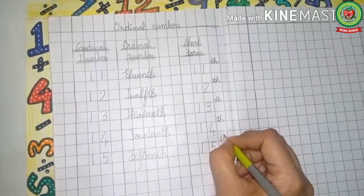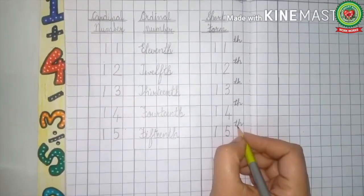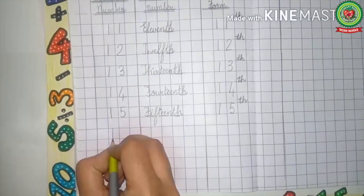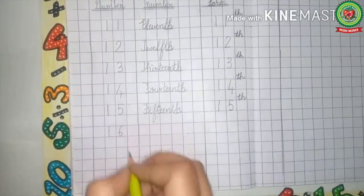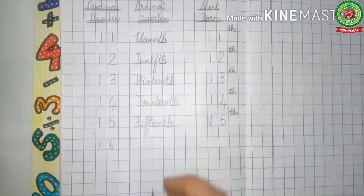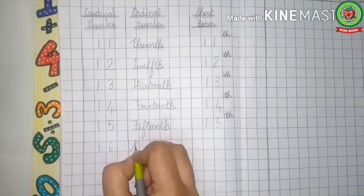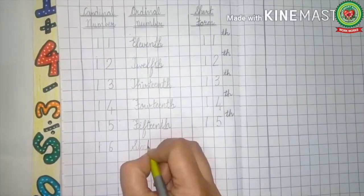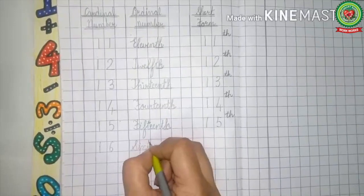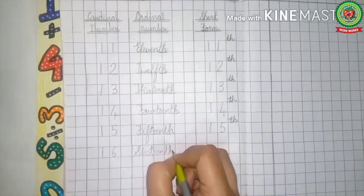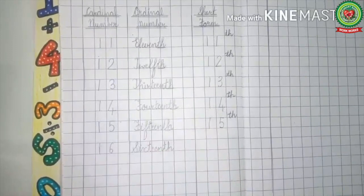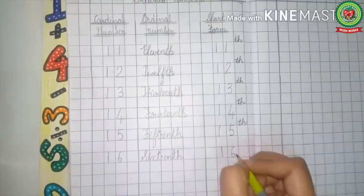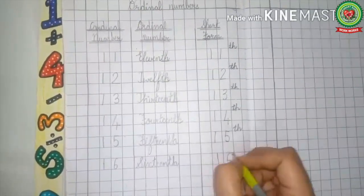After 15 comes 16, and the ordinal number of 16 is 16th. We write the spellings of 16 and add TH and it becomes 16th. Again in the short form, we write 16 and add the last two letters TH.